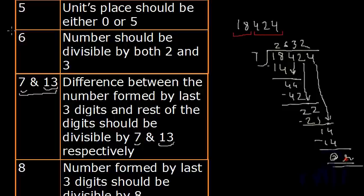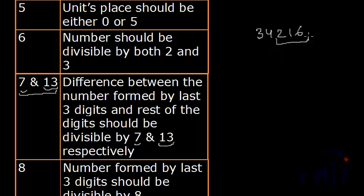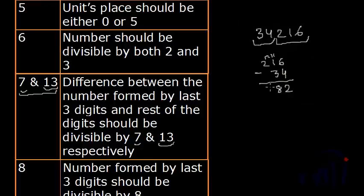Now let's check the divisibility rule of 13. Divisibility rule of 13 says the difference between the number formed by the last three digits and the rest of the digits should be divisible by 13. Both rules for 7 and 13 are written together because they sound the same, making it easier to remember. Let me take the number 34,215. The number formed by the last three digits is 215 and the rest is 34. The difference is 215 minus 34: 6 minus 4 is 2, 11 minus 3 is 8, leaving 1 — giving us 182. If this 182 is divisible by 13, then 34,215 will also be divisible by 13.